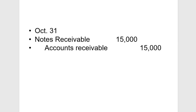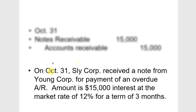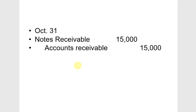Let's first do our journal entry for the note receivable. If you weren't quite sure what this note was for, if you back up to the other screen you'll see that someone paid off an overdue accounts receivable by signing a note. Here is our journal entry to accept the note receivable.